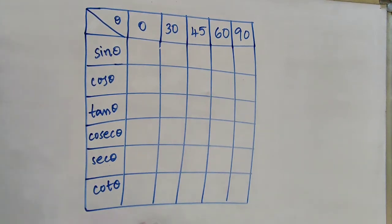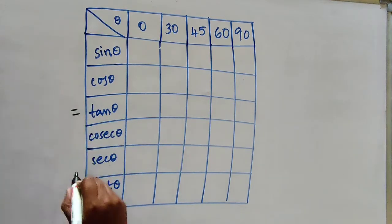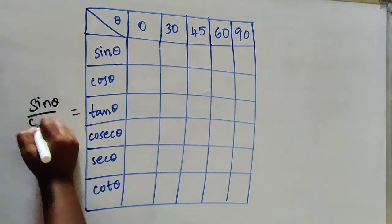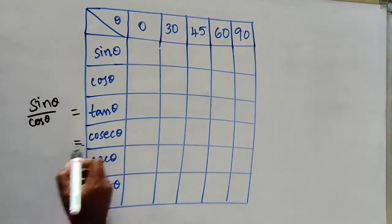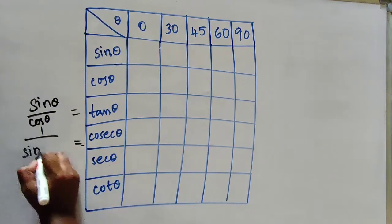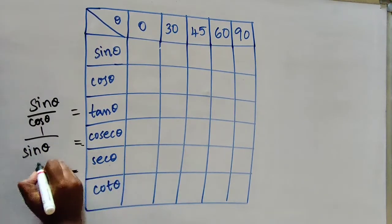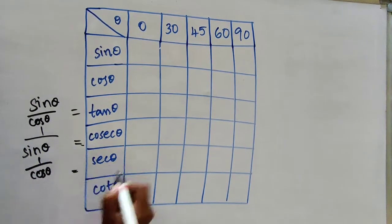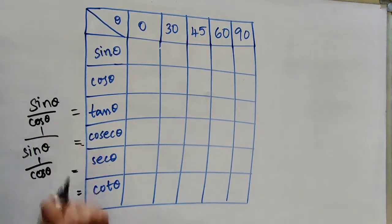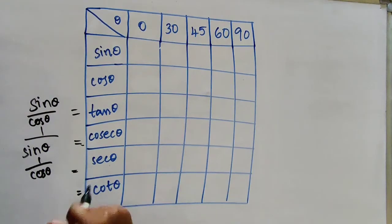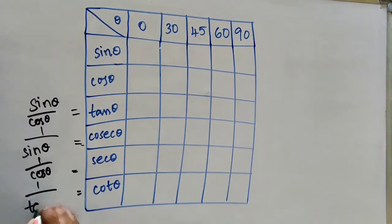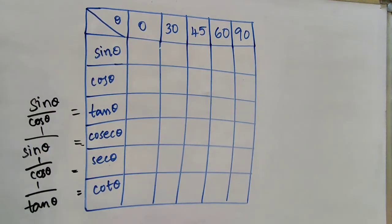And again, my trigonometric ratios also go the same way. So tan theta equals sin theta by cos theta. Cosecant theta equals 1 by sin theta. Secant theta is 1 by cos theta. Cot theta is 1 by tan theta, or cos theta by sin theta. Either way, you can write the angle.